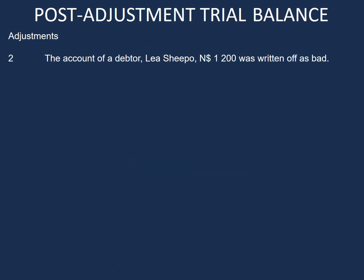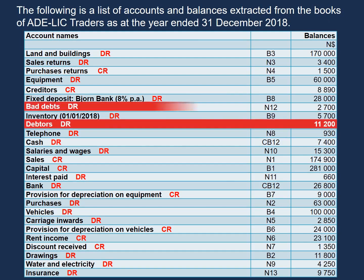The account of a debtor, Leah Shippo, 1,200, was written off as bad. The two accounts we have are Leah Shippo, which is a debtor, and bad debts. We can go to our list of balances and highlight these accounts so that we know we need to make adjustments for them. We have our debtors and our bad debts account. By marking our accounts like this, it will make it easier for us to do the adjustments.